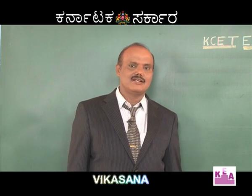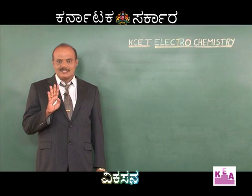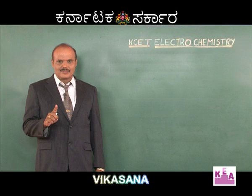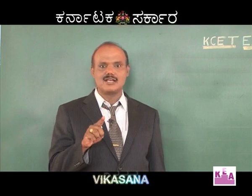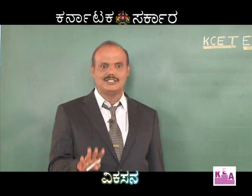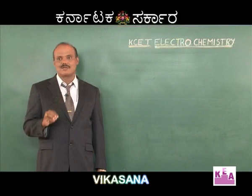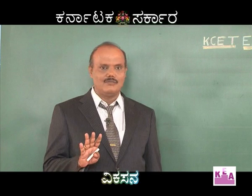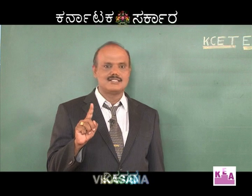Let us know the correct information regarding the galvanic cell. As I told you, galvanic cell is a device from which electricity is produced by spontaneous chemical reactions involving oxidation and reduction. That spontaneous word is very important because from non-spontaneous chemical reactions we cannot produce electricity. So now we have to know the galvanic cell by taking the Daniel cell as an example.